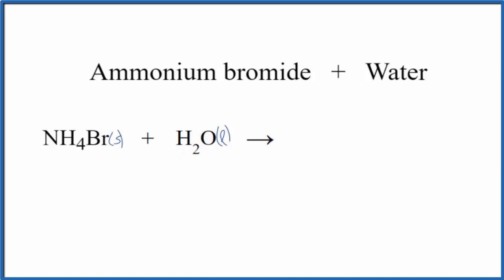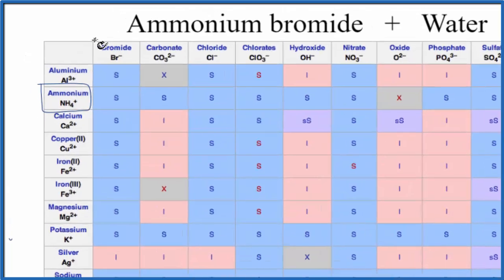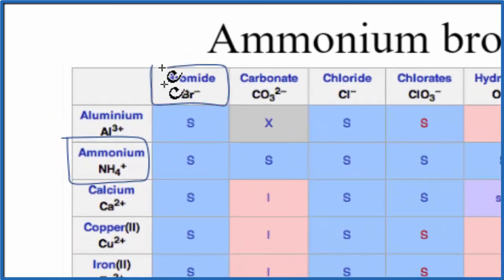We could also look at a solubility chart to see whether this is soluble in water. So on our solubility chart, we go down, these are the positive ions. Here's the ammonium ion, NH4 plus, and bromide, right next to it, Br minus.